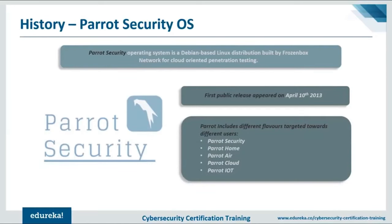Parrot Security is the original Parrot OS, designed with penetration testing, forensics, hacking, development, and privacy in mind. Parrot Home is targeted towards desktop users, stripping out penetration testing packages. Parrot Air focuses on wireless penetration testing. Parrot Studio is designed with multimedia creation in mind. Parrot Cloud targets server applications, giving users access to the full suite of penetration testing tools but without a graphical front-end. Parrot IoT is designed for low-resource devices such as Orange Pi, Raspberry Pi, and Pine 64.